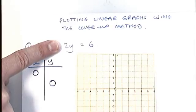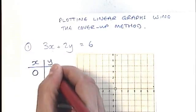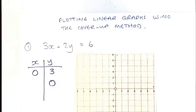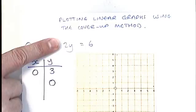And I hope that you can solve that equation. 2y equals 6. If you half both sides of the equation, you get y equals 3. And that aspect there, when I cover up that part, is why this is called the cover-up method. I'm covering up one part, the x part, and I'm working out the y value.